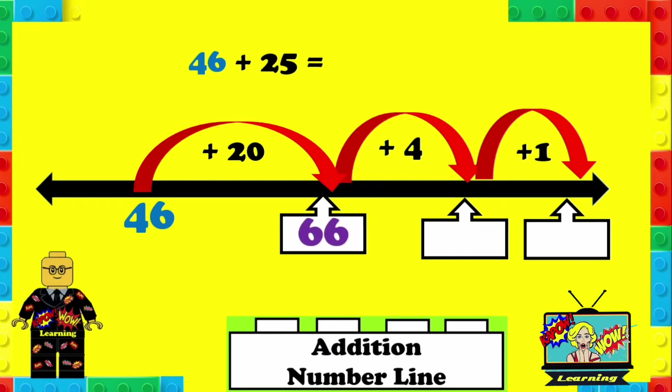66 plus 4. Now we're adding 4 because it takes us to 70 and we have 1 left, so 70 plus 1 is 71. And so the answer is 46 plus 25 equals 71.